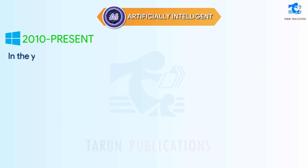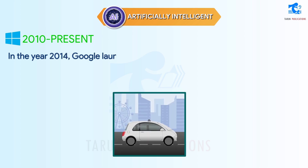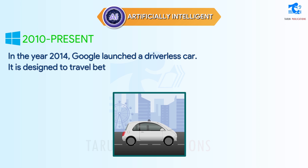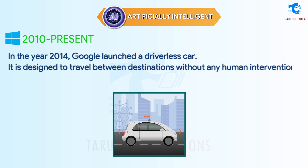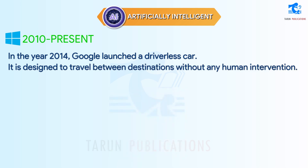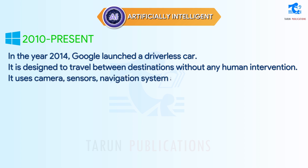In the year 2014, Google launched a driverless car. It is designed to travel between destinations without any human intervention. It uses cameras, sensors, a navigation system, and AI.